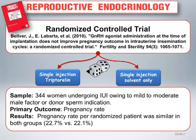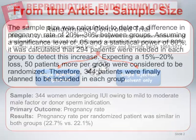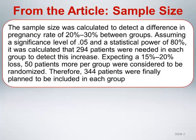There are several key components to determining sample size that we will discuss in this section. Quoting from the materials and methods section of the manuscript, the sample size was calculated to detect a difference in pregnancy rate of 20 to 30%.